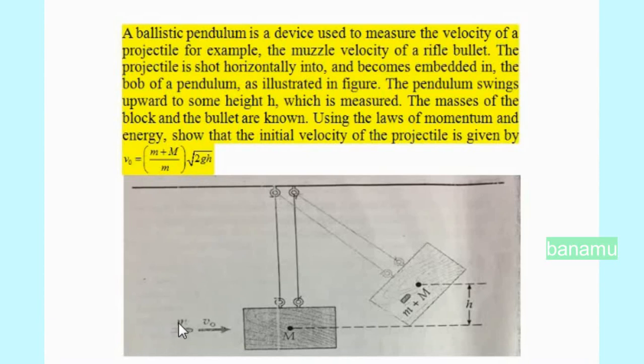Small m is the mass of the bullet. V0 is the initial velocity of the bullet. Capital M is the mass of the block at rest, so initial velocity is zero. After collision, the block moves with velocity V and reaches the maximum height h, and the total mass is small m plus capital M.